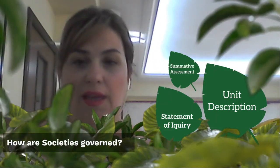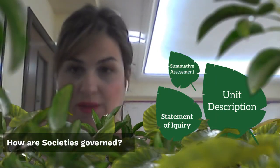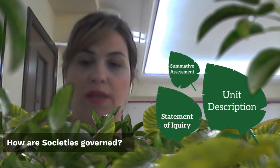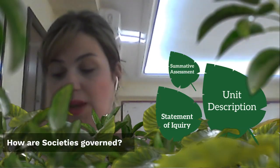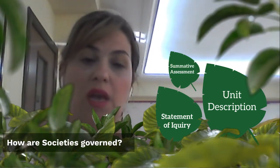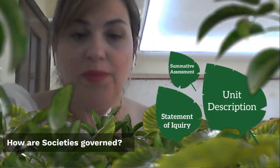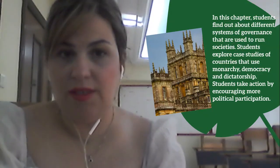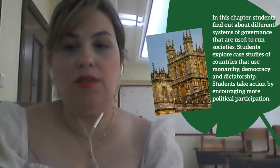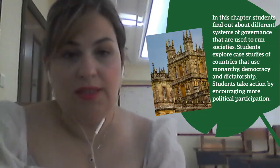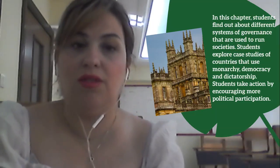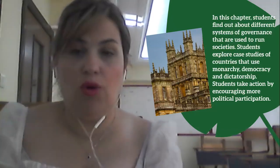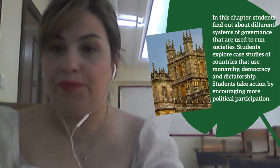My dear students, this video is a summary of what we're going to cover in Chapter One of the Individuals and Societies course. Chapter One is entitled 'How Are Societies Governed.' We're going to discuss three broad types of governance: monarchy, democracy, and dictatorship. We'll explore case studies of countries that use each system, and take action by encouraging more political participation within societies.